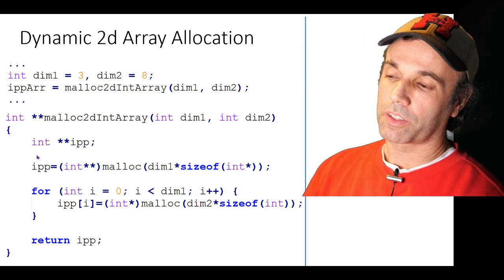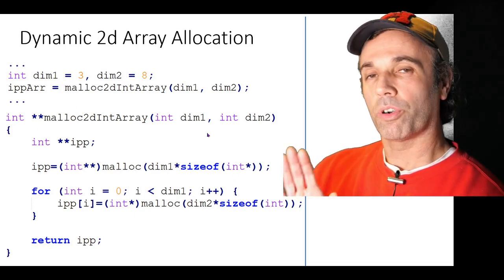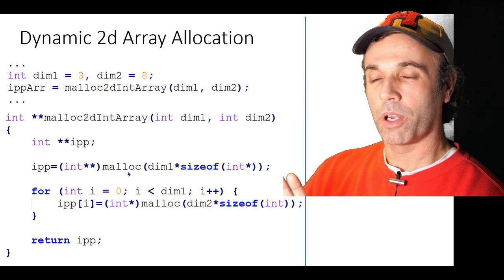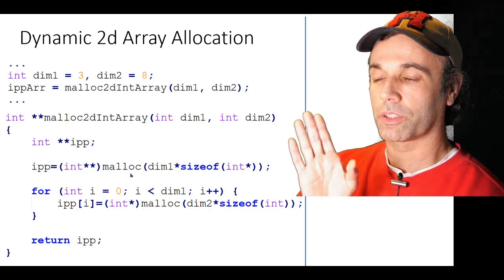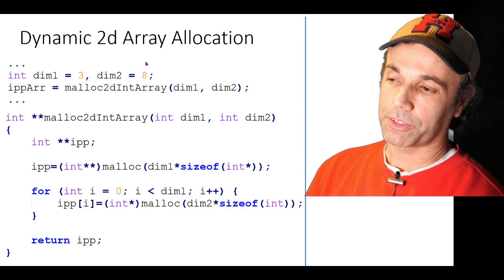Okay, so this is our function for allocating a 2D array. Don't worry about any of the details of this at the moment because we're going to run through it with diagrams in great detail.